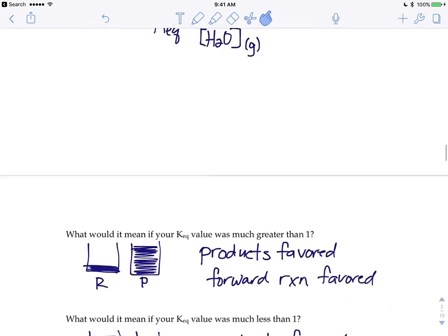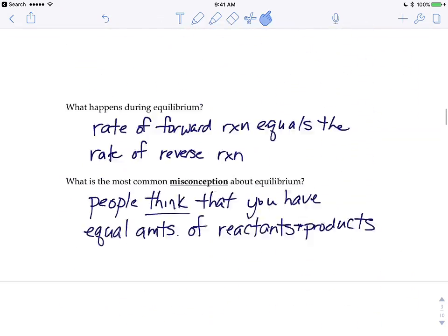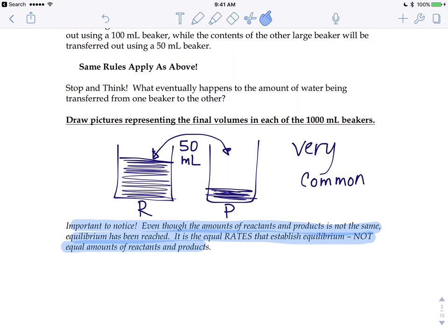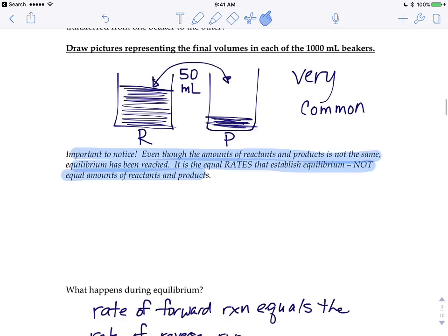If we go back to our equilibrium from yesterday, if I dumped a whole bunch of water into one of those beakers, suddenly we'd be able to pass back more than 50 milliliters. So changing the amounts in the reactants beaker or the products beaker is going to mess up equilibrium.